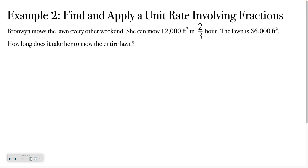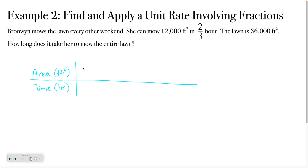Let's keep up with the same idea. Bronwyn mows the lawn every other weekend. She can mow 12,000 square feet in two thirds of an hour. The lawn is 36,000 square feet. How long does it take her to mow the entire lawn? Let's make a little table with area in square feet and time in hours. The information the problem gave us is that she can mow 12,000 square feet in two thirds of an hour. So the first thing we want to do is find out how much she can actually mow in one hour.